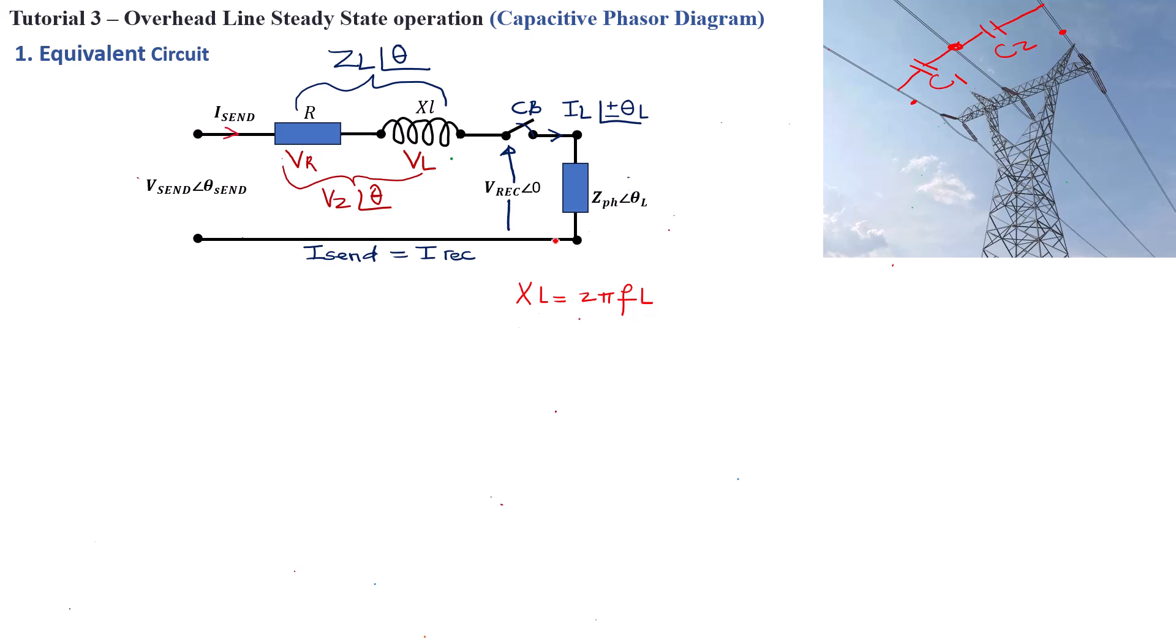The inductance will allow more current to flow in the circuit with the current basically lagging the voltage by 90 degrees, as we've seen in the previous tutorial.